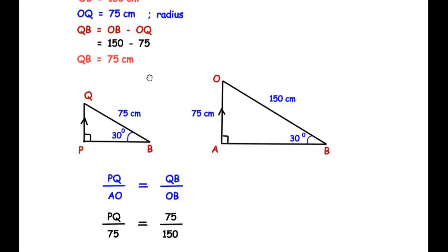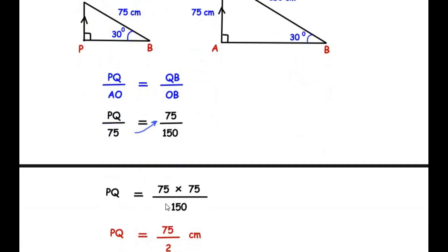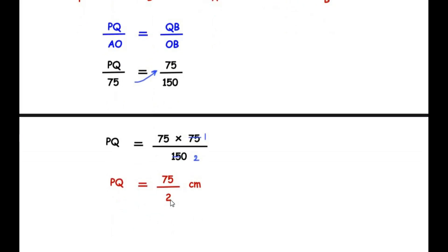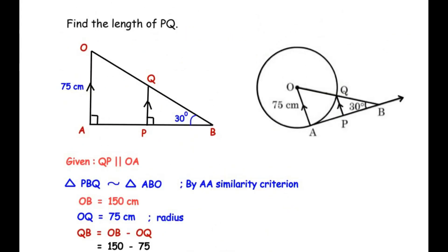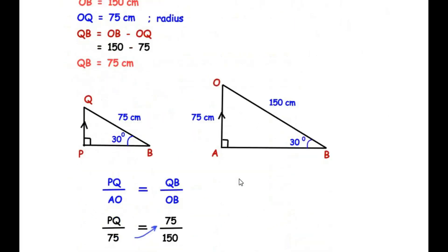Since the triangles are similar, the ratio of their corresponding sides is proportional: PQ / AO = QB / OB. Substituting the known values: PQ / 75 = 75 / 150. So PQ = 75 × (75 / 150) = 75 / 2 centimeters. I hope you have understood all the steps and liked the video. If you found this video useful, check out the playlist for more examples of this kind. Like, share, and subscribe to my channel — thank you for watching.